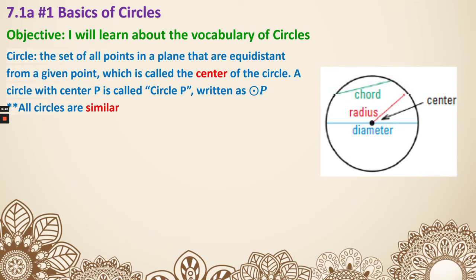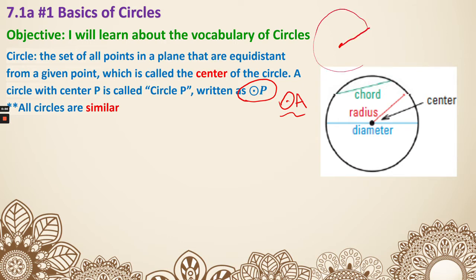We know what a circle is, but let's look at the definition of circle in geometry. It is the set of all points in a plane that are equidistant from a given point, which is called the center of the circle. When we want to write circle, we use this notation - we draw a little circle with a center and then put a letter, like A, B, or C, and that is called circle A or circle P. All circles are actually similar. If we look at that definition and think about how we use a compass, you have one point, a distance, and you draw a circle - all the lines are the same distance. That's how we get the definition for a circle.